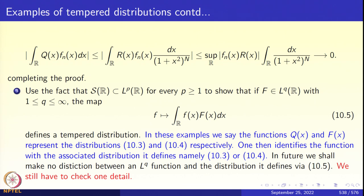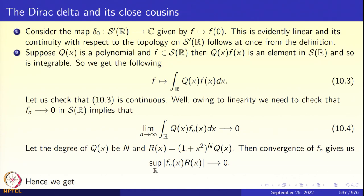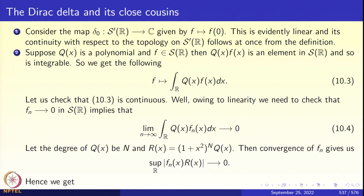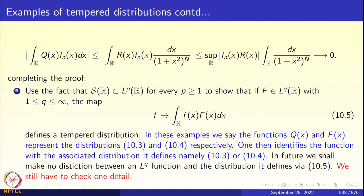In short, every Lq function F gives a tempered distribution: multiply F by little f and integrate. The distributions in displays 10.4 and 10.5 are said to be represented by the polynomial q and the function F respectively. We make no distinction between the distribution and the function representing it. But we must check one small detail: is this identification injective? If two elements g and h in Lq give the same distribution, must g = h almost everywhere?